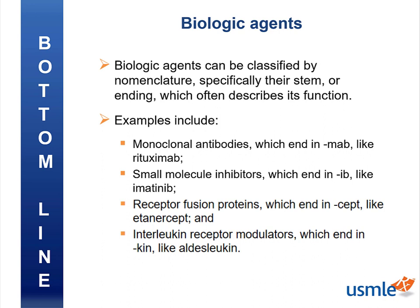Examples include monoclonal antibodies, which end in 'mab', like rituximab; small molecule inhibitors, which end in 'ib', like imatinib; receptor fusion proteins, which end in 'cept', like etanercept; and interleukin receptor modulators, which end in 'kin', like aldesleukin.